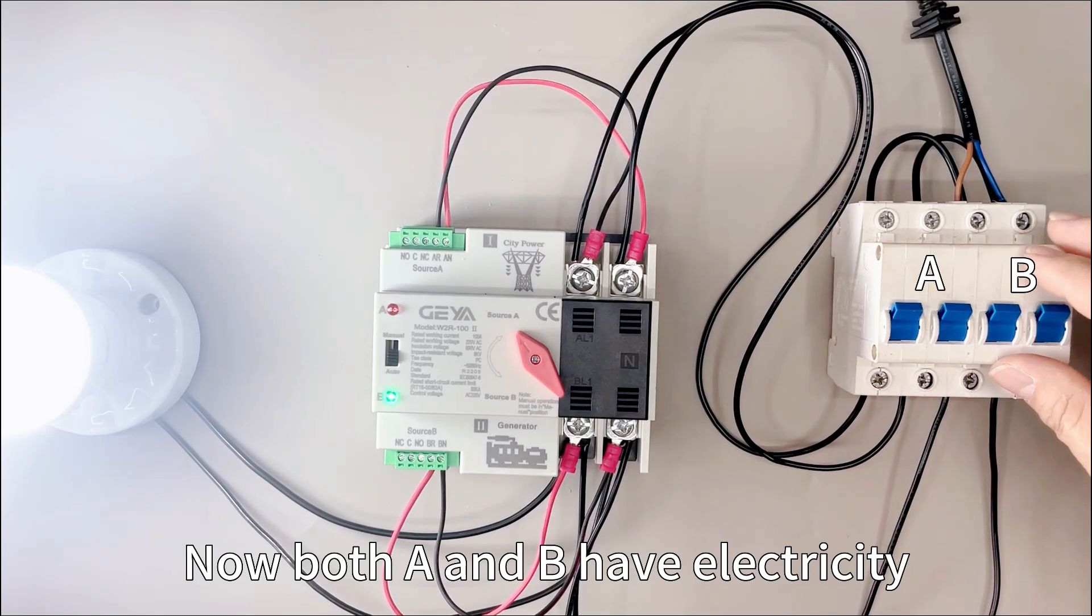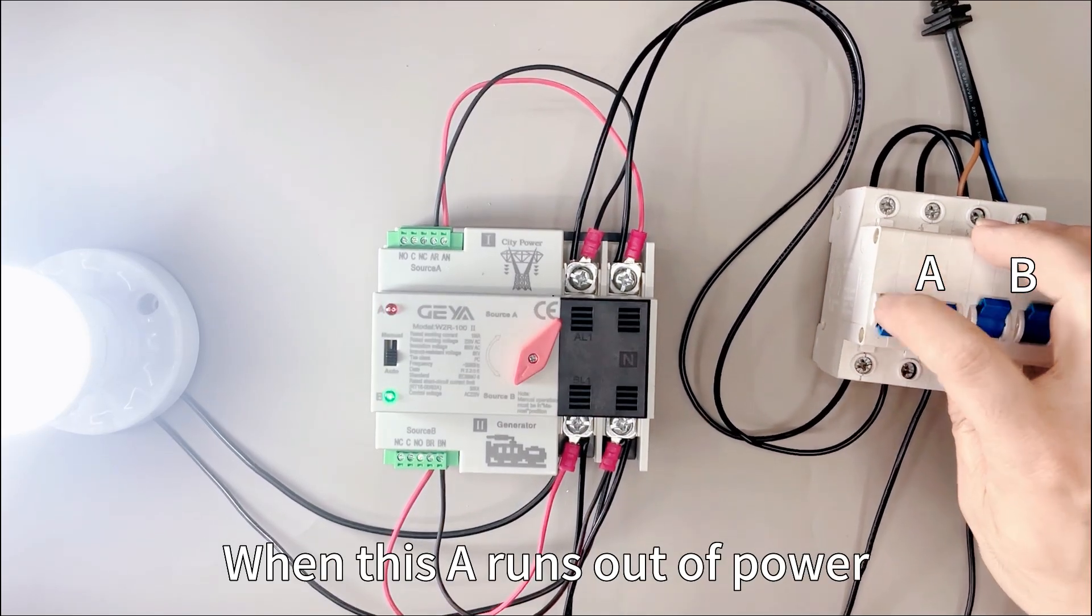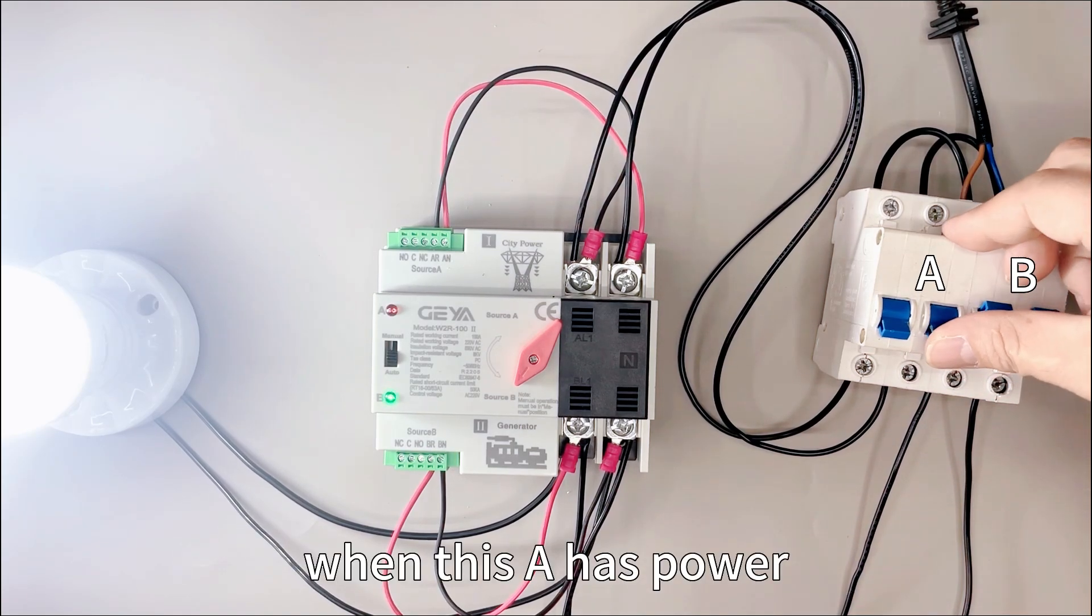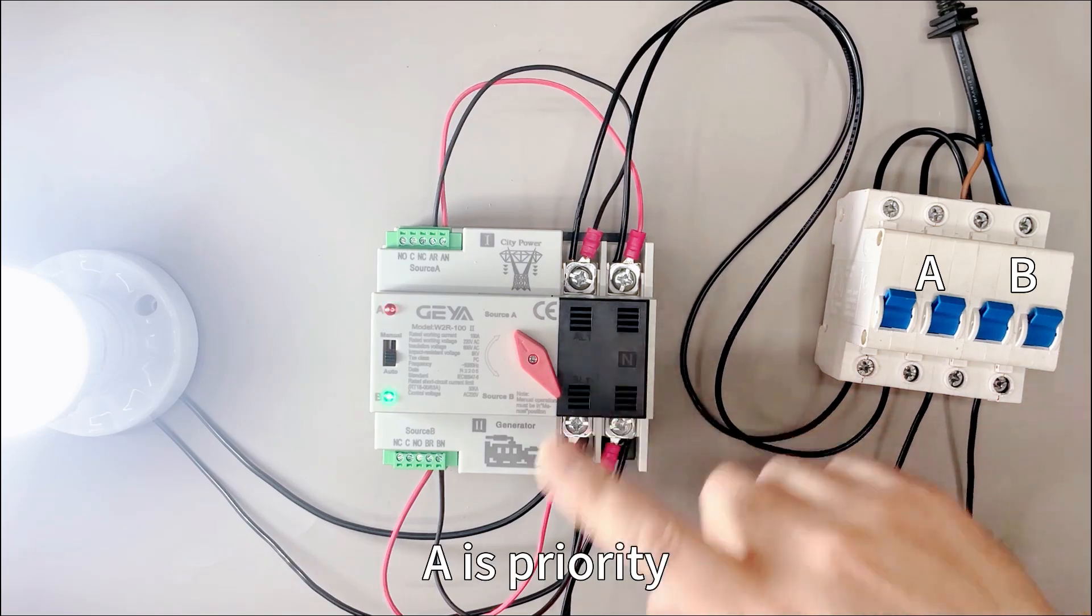Now both A and B have electricity. When A runs out of power, it will automatically switch to B. When A has power, it automatically switches to A. A is priority.